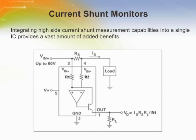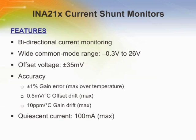These dedicated current sense amplifiers can accurately measure or control current for battery monitoring, power supply monitoring, battery charging, and any other application. The INA210, INA211, INA212, INA213, and INA214 are voltage output current shunt monitors that can sense drops across shunts at common mode voltages from negative 0.3 volts to 26 volts, independent of the supply voltage.